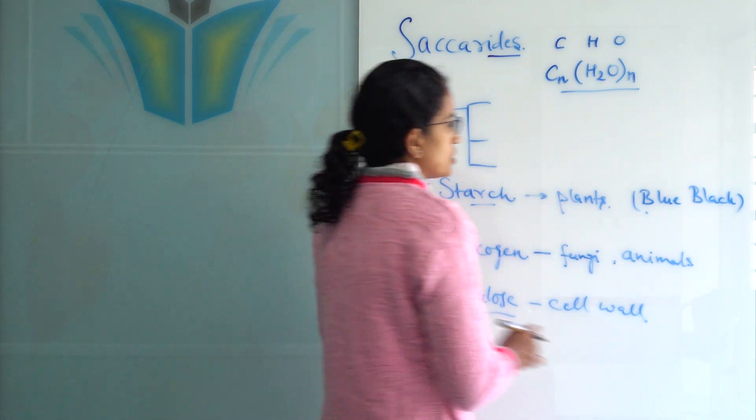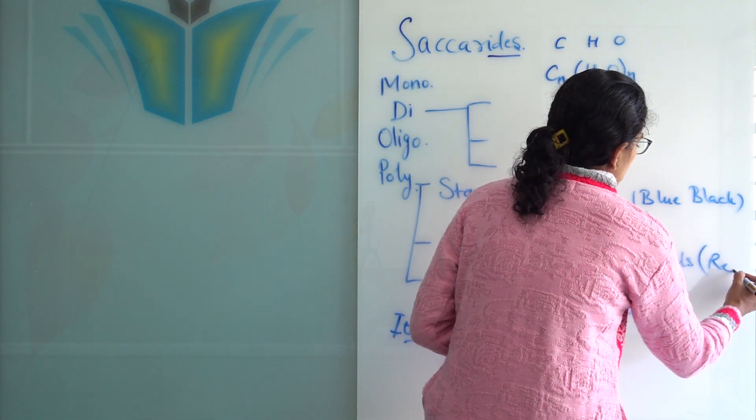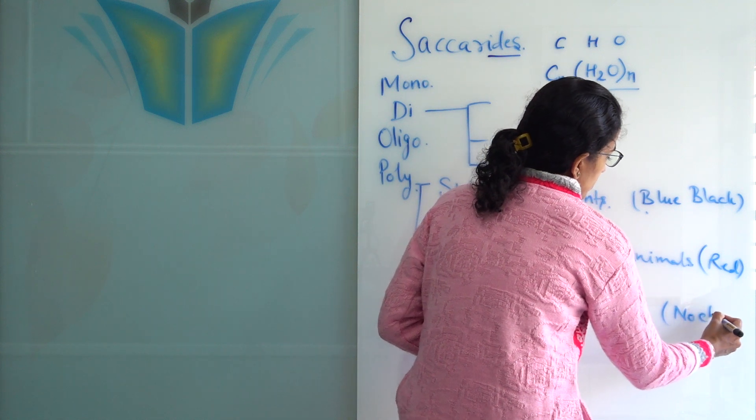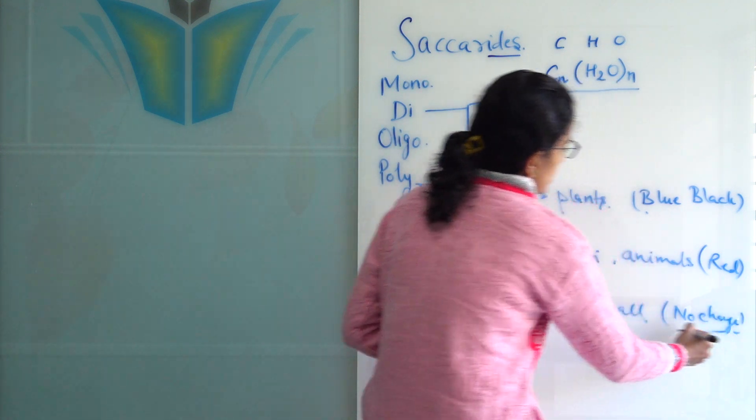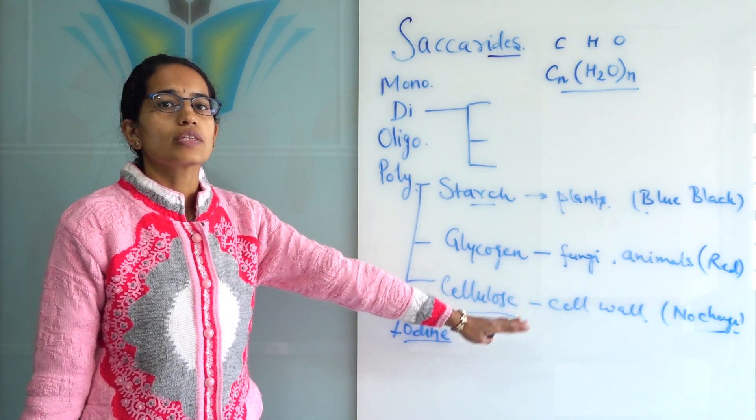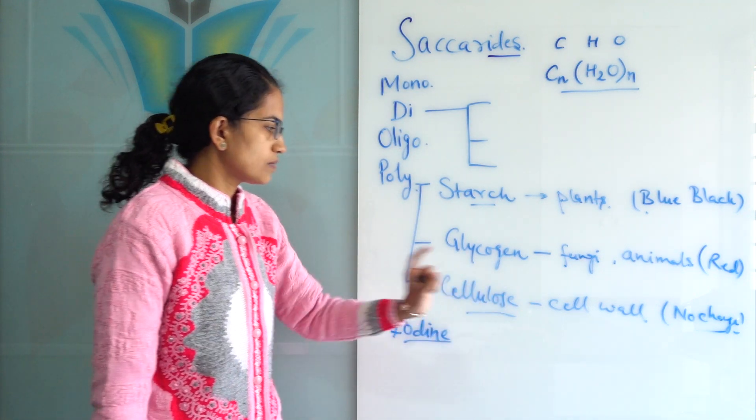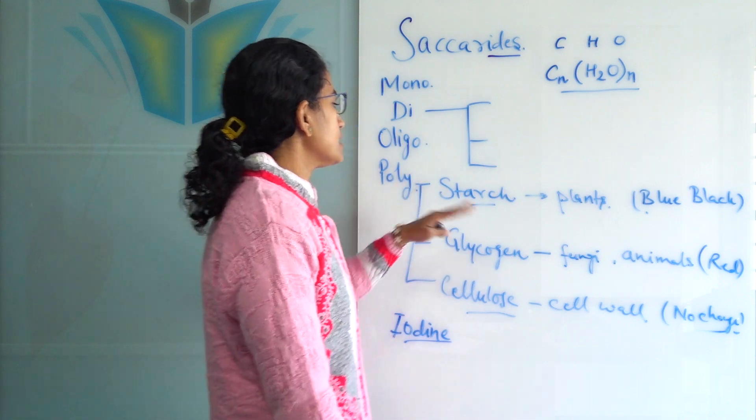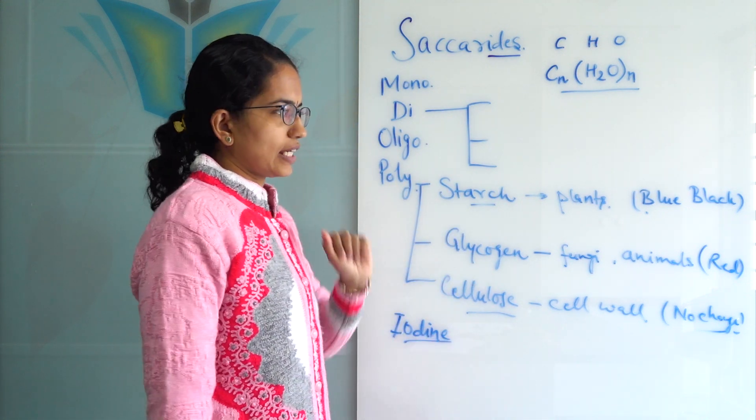If it is glycogen, it would turn red. And if there is no change, that means it is a cellulose. And why cellulose has no change? It is because there is no helical structure which is present in the cellulose. So, these are the three important polysaccharides.